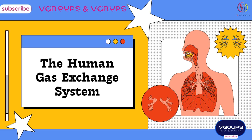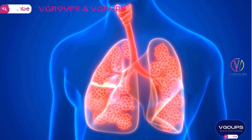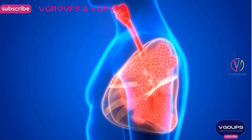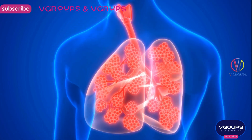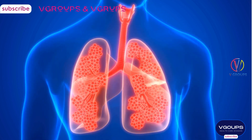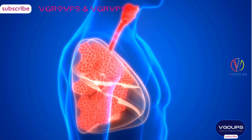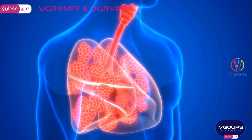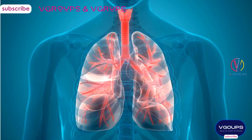Anatomy of the Lungs — Structure: The right lung is divided into three lobes: upper, middle, and lower lobes. The left lung is divided into two lobes: upper and lower lobes. It also accommodates the cardiac notch to make room for the heart.